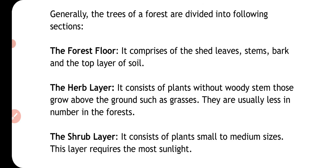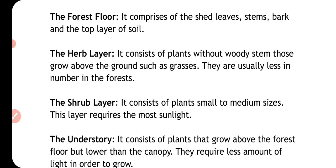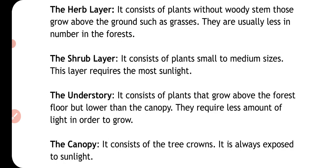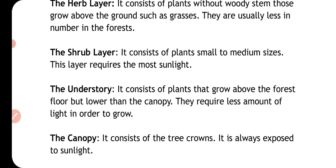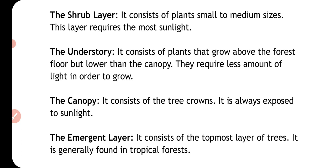Generally, the trees of a forest are divided into the following sections. First is the forest floor — it comprises shed leaves, stems, barks and the top layer of the soil. The second section is the herb layer, which contains herbs such as grasses, and is closer to the soil level.